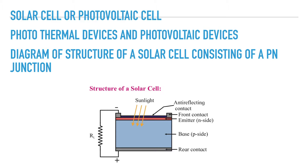A solar cell, also known as a photovoltaic cell, converts solar energy — that is, light energy — directly into electrical energy.